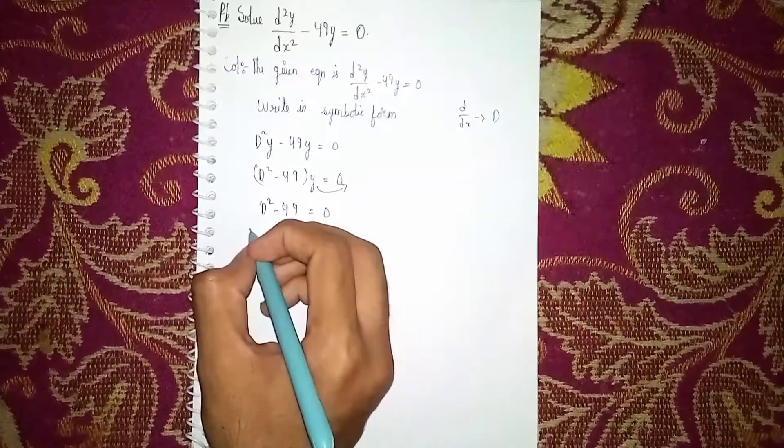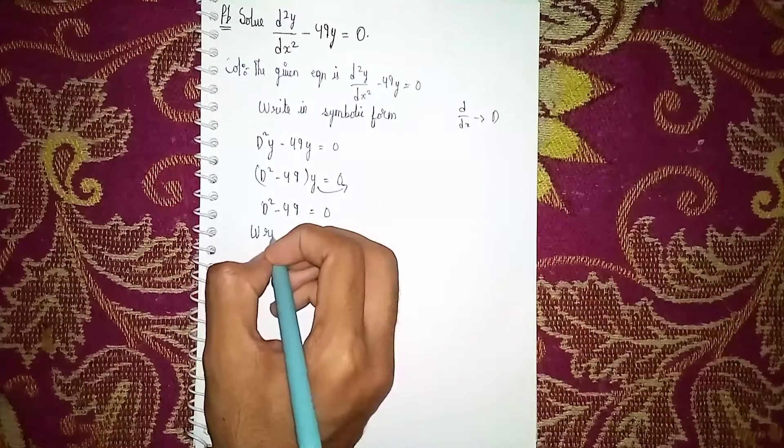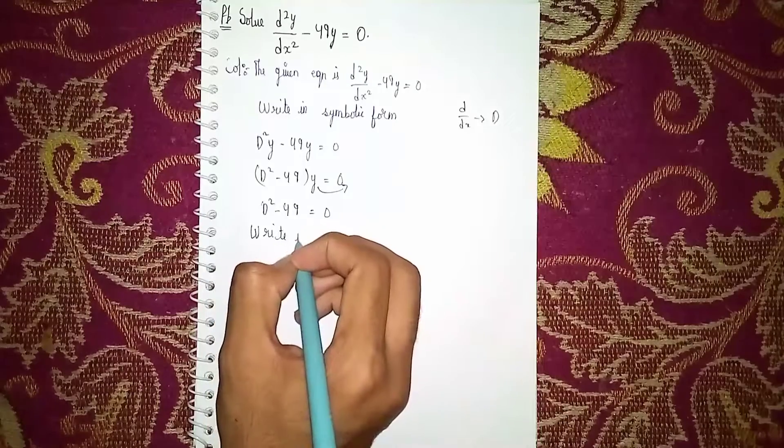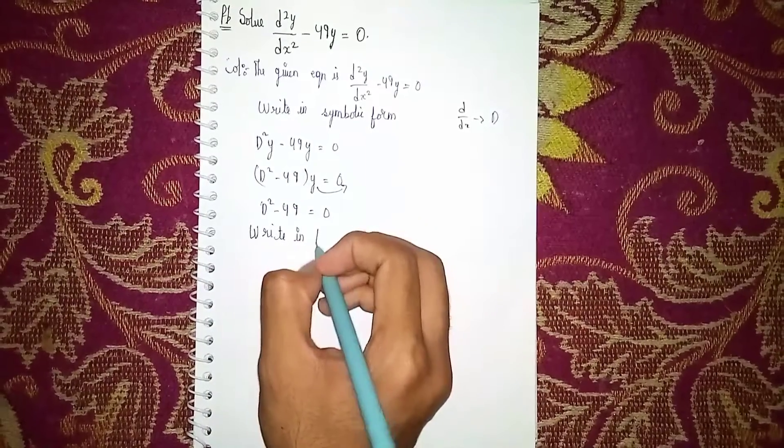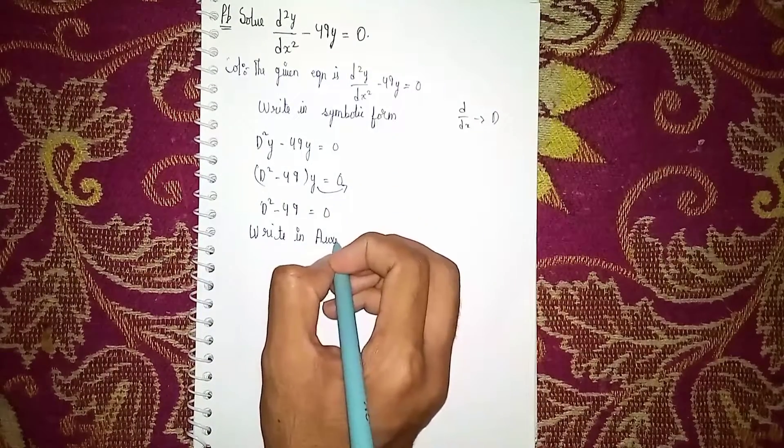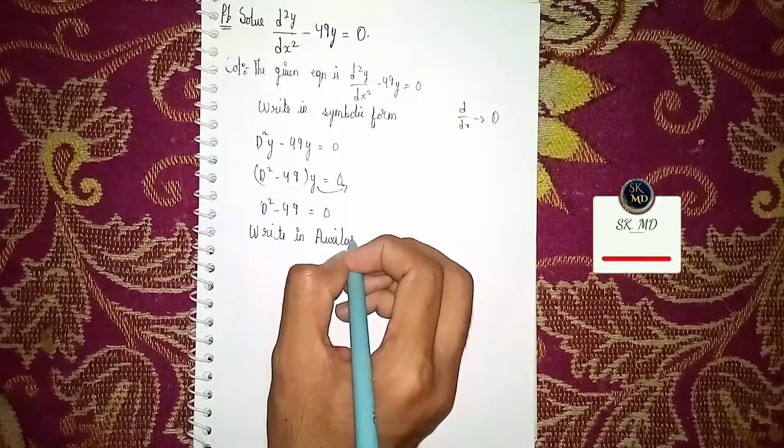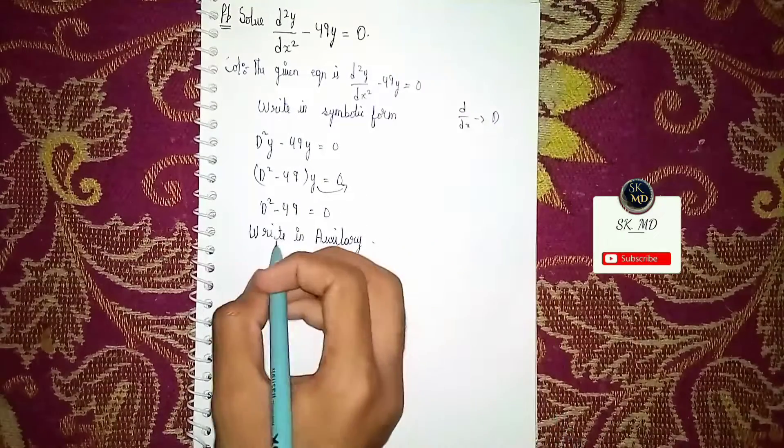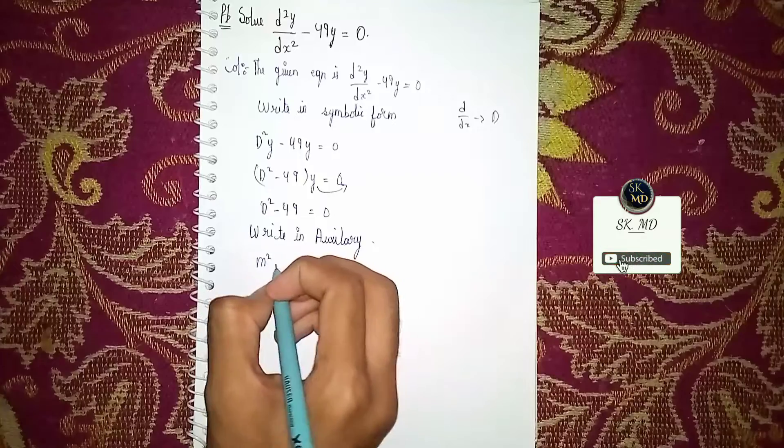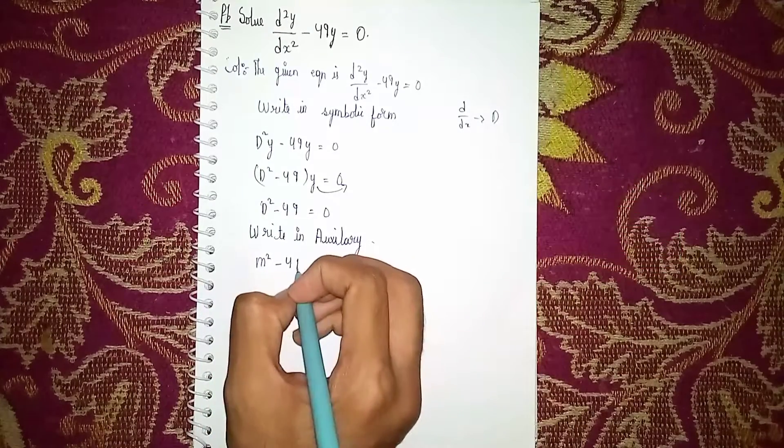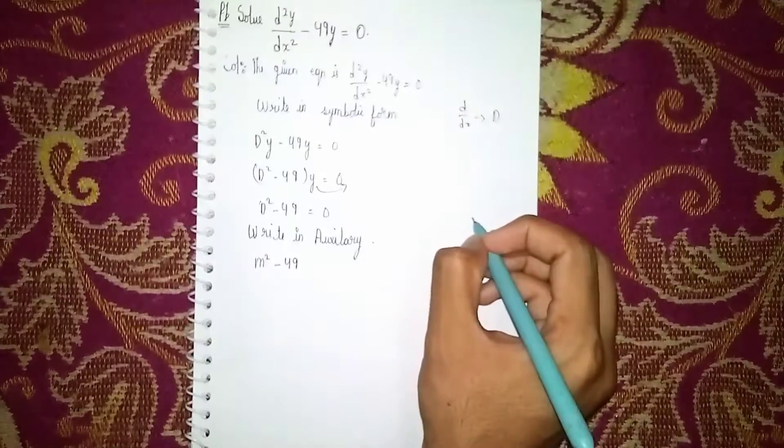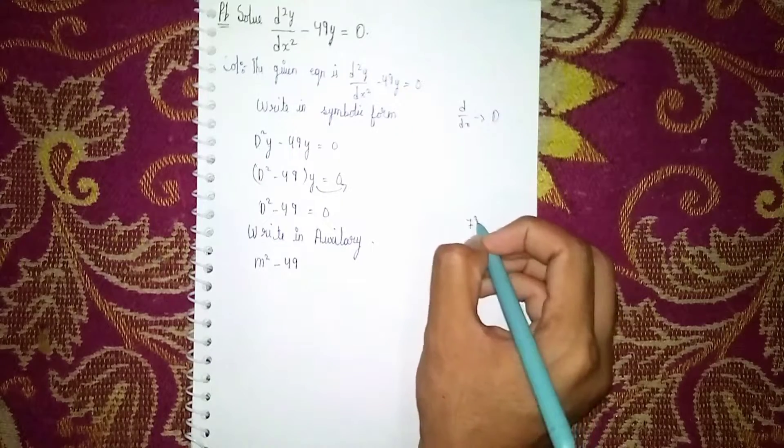Write in auxiliary form. Auxiliary form means instead of D I write m. Why I'm writing m? To find the roots. So m² - 49.